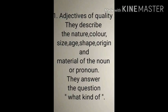So we will learn each of the types with the definition. Adjective of quality describes the nature, color, size, age, shape, origin and material of the noun or pronoun. They answer the question, what kind of. So if there is a sentence and you get what kind of as the answer, then that type of sentence contains adjective of quality.